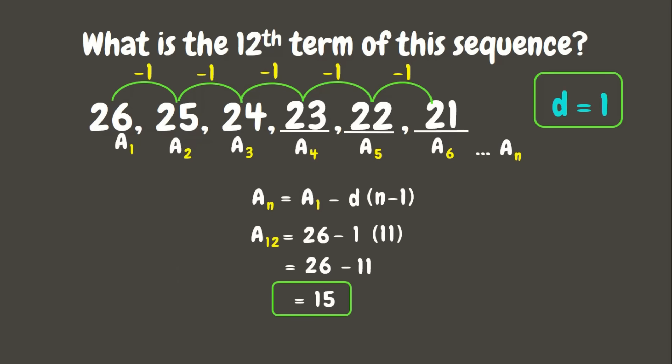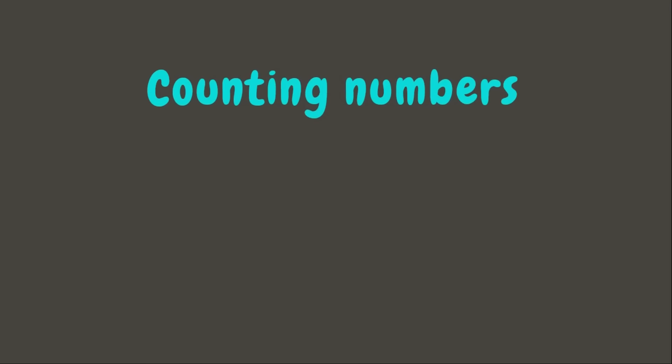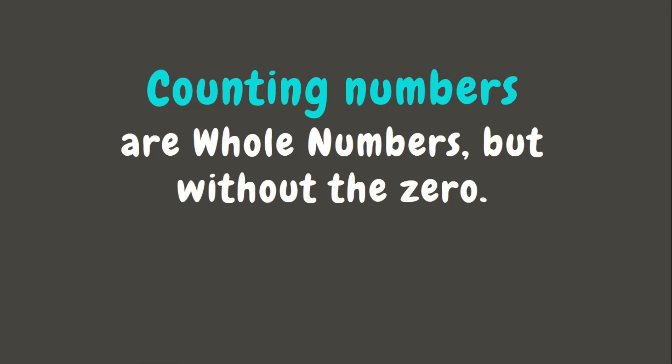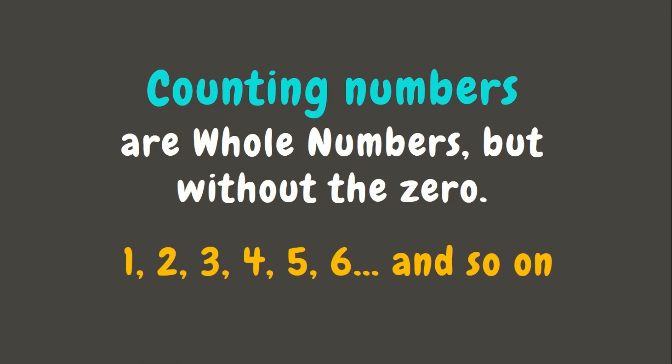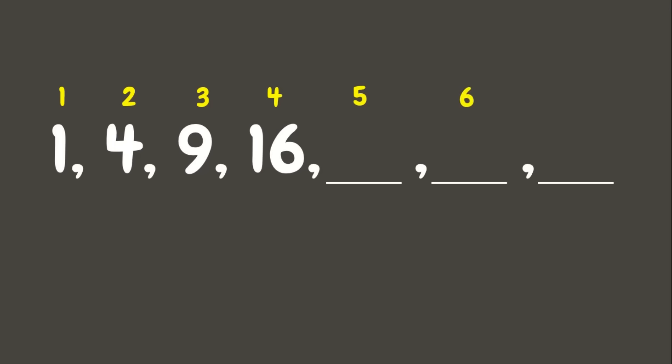Now there is another way of formulating an nth term rule if the sequence doesn't have a common difference. We can use counting numbers — whole numbers without zero: 1, 2, 3, 4, 5, 6, and so on. Let's try with the sequence 1, 4, 9, and 16. We count the number of terms: 1, 2, 3, 4, 5, 6, 7, and so on. If we multiply 1×1 we get the first term, which is 1. If we multiply 2×2 we get 4.